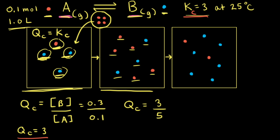Since QC is equal to 0.6 and KC is equal to 3, at this moment in time QC is less than KC. There are too many reactants and not enough products. Therefore, the net reaction is going to go to the right, decreasing the amount of A and increasing the amount of B.